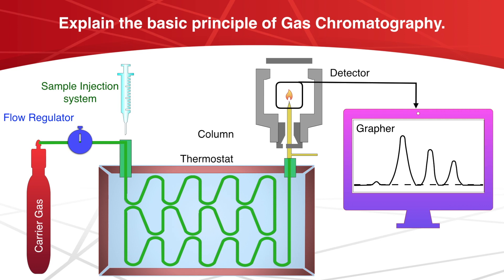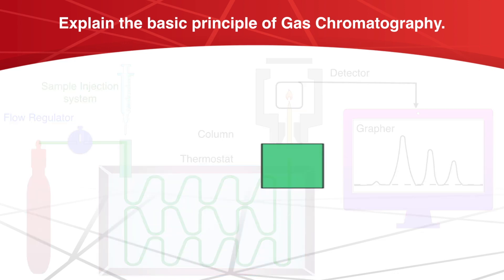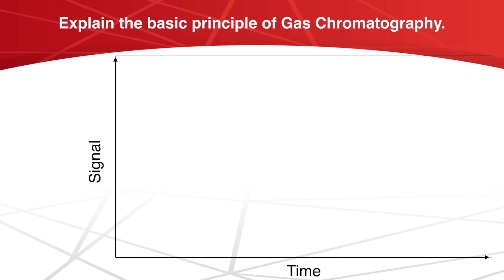The signals given by the detector are recorded. The development of the chromatogram can be obtained from grapher. As the pure carrier gas flows through the column and passes into the detector, a straight line is drawn by a pen recorder on the chart. This is the baseline or the zero line.